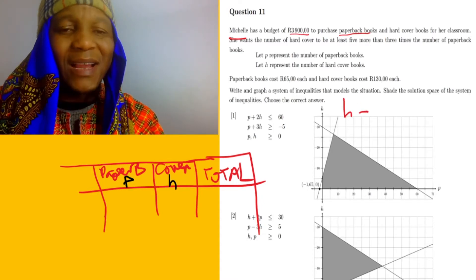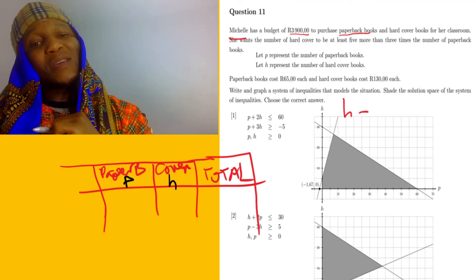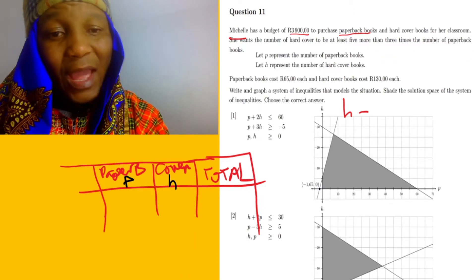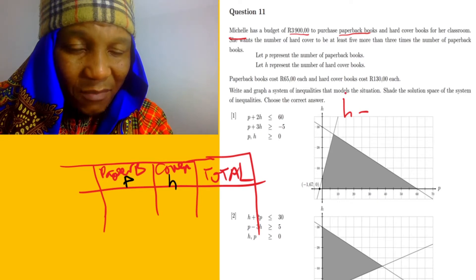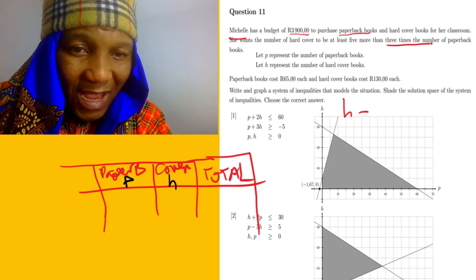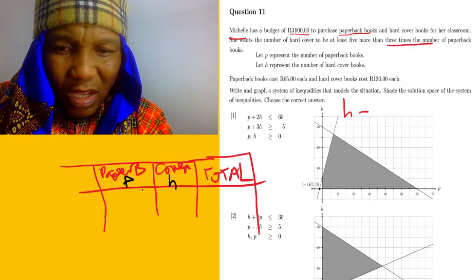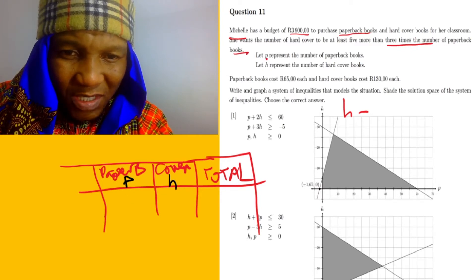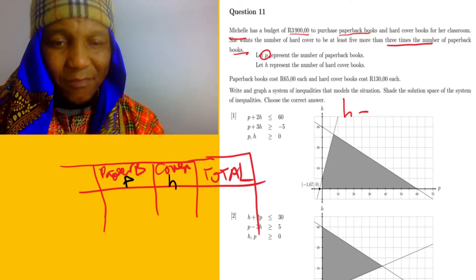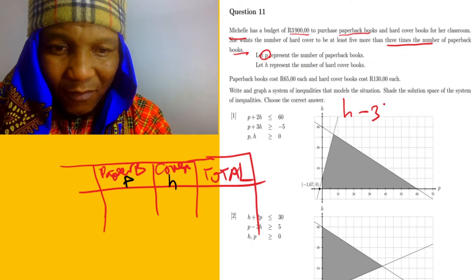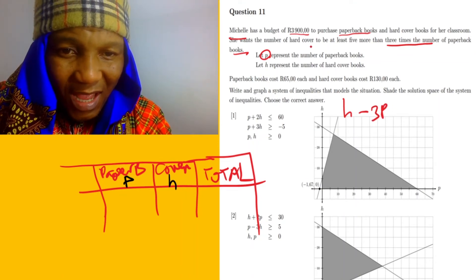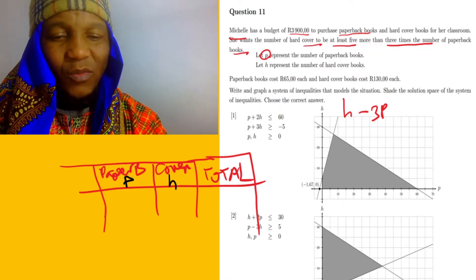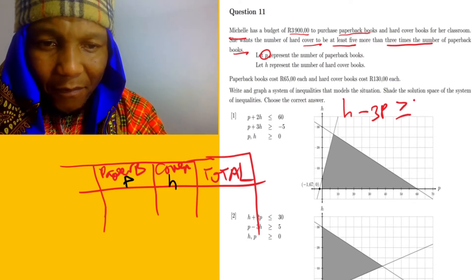So h is the bigger one. If hardcover must be more than paper books, I say h minus — because one is bigger than the other — so it's going to be: h minus three p, meaning hardcover must be five more than three times the number of paper books. So h minus three p, and she wants the number of hardcover to be at least — so what is at least?